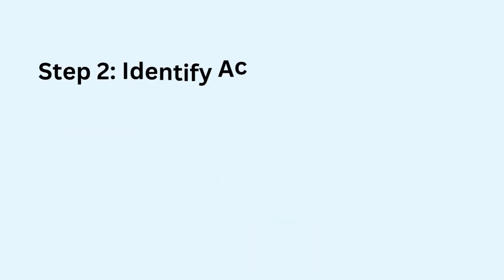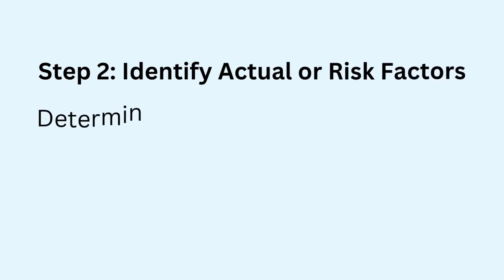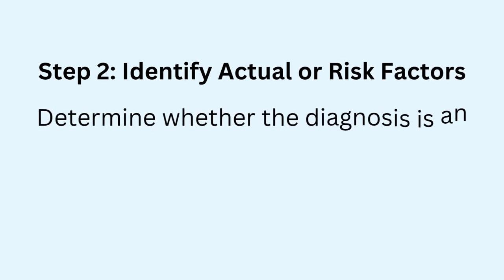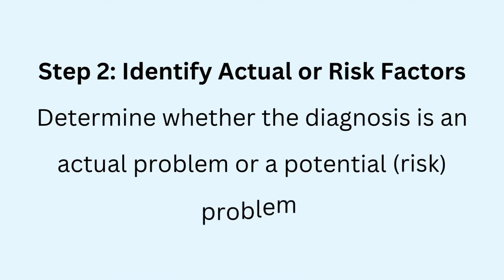Step 2: Identify actual or risk factors. Determine whether the diagnosis is an actual problem or a potential risk problem. In the case of pneumonia, this could include: 1. Actual diagnosis, if the patient is already exhibiting signs and symptoms of pneumonia such as fever, cough, chest pain, and difficulty breathing. 2. Risk diagnosis, if the patient is at risk of developing pneumonia due to factors like recent surgery, impaired immune system, or comorbidities.